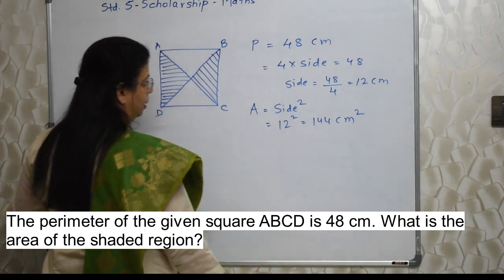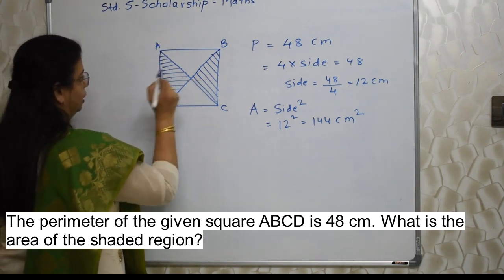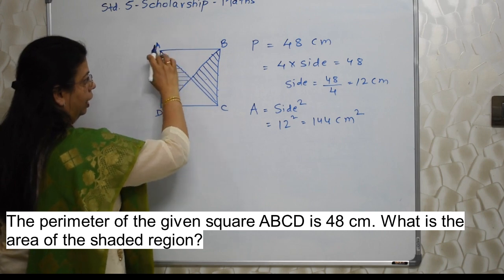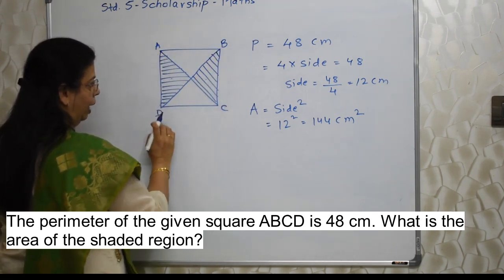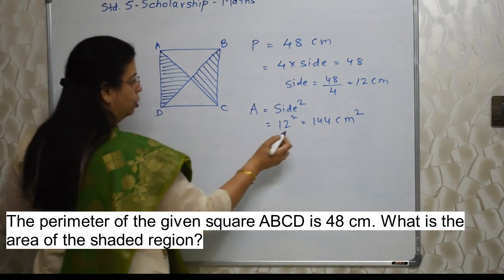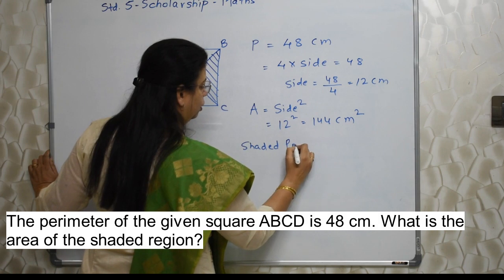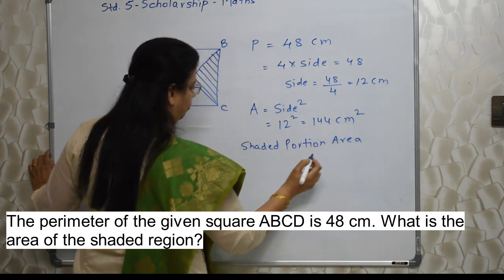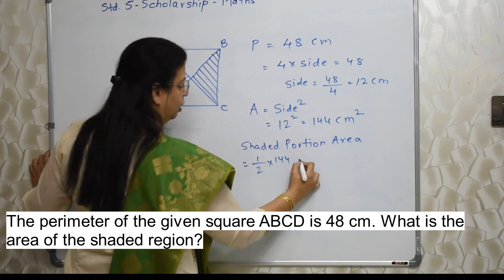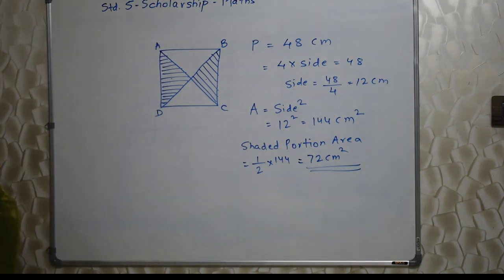Please be careful — area is always in square units. But this is the area of the entire square. Do we require that? No — we want only the shaded region, which is exactly half of the entire square. If you observe properly, you will know that the shaded portion is exactly half of the entire square. So the area of the shaded portion will be half of 144, which is 72 centimeters square. This is our answer. Very, very easy!